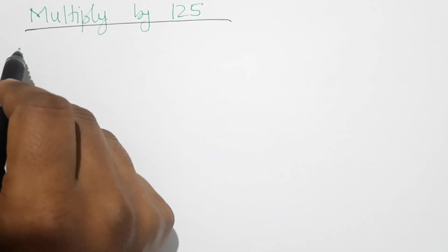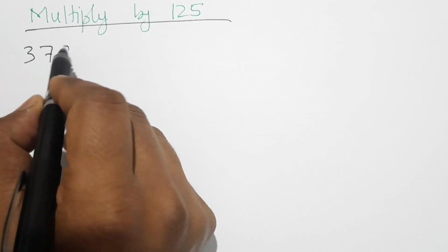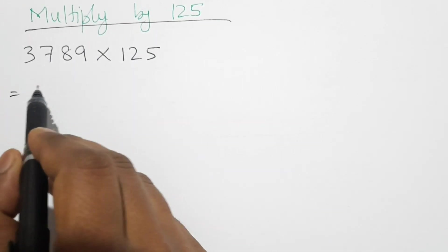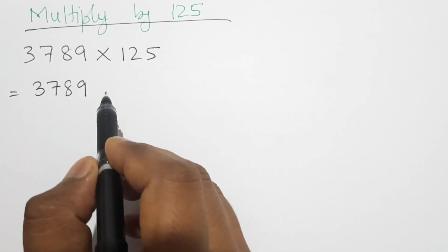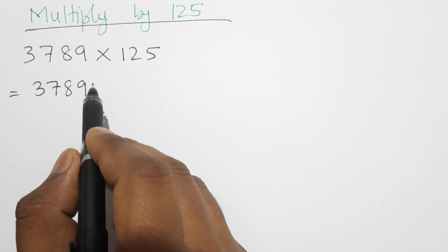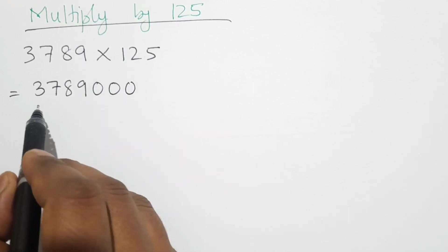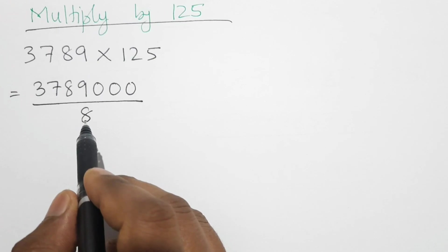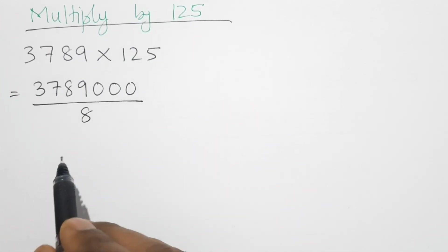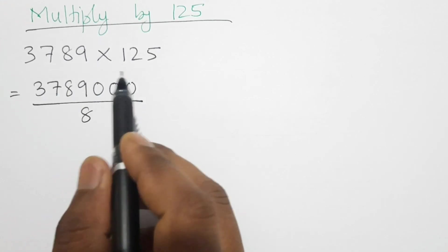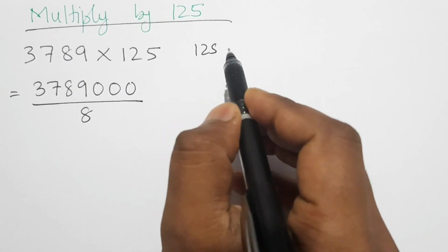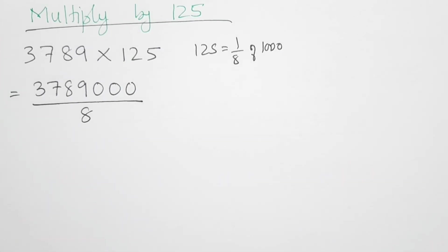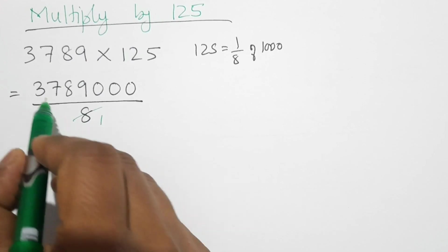Let's take the four-digit number 3789 and multiply by 125. First we multiply the given number by 1000 — we put three zeros behind to get 3789000. Then we divide by 8, because 125 is one-eighth of 1000. That is why we divide by 8.